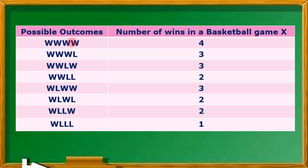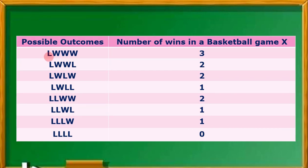Now let's count the number of wins in each outcome. In the 4W outcome, we have 4 wins. In 3W-1L, we have 3. Moving along, we see outcomes with 3 wins, 2 wins, 3 wins, 2 wins, 2 wins, and 1 win. In the second half of the table with 8 L's, we count: 3W, 2W, 2W, 1W, 2W, 1W, 1W, and 0W.